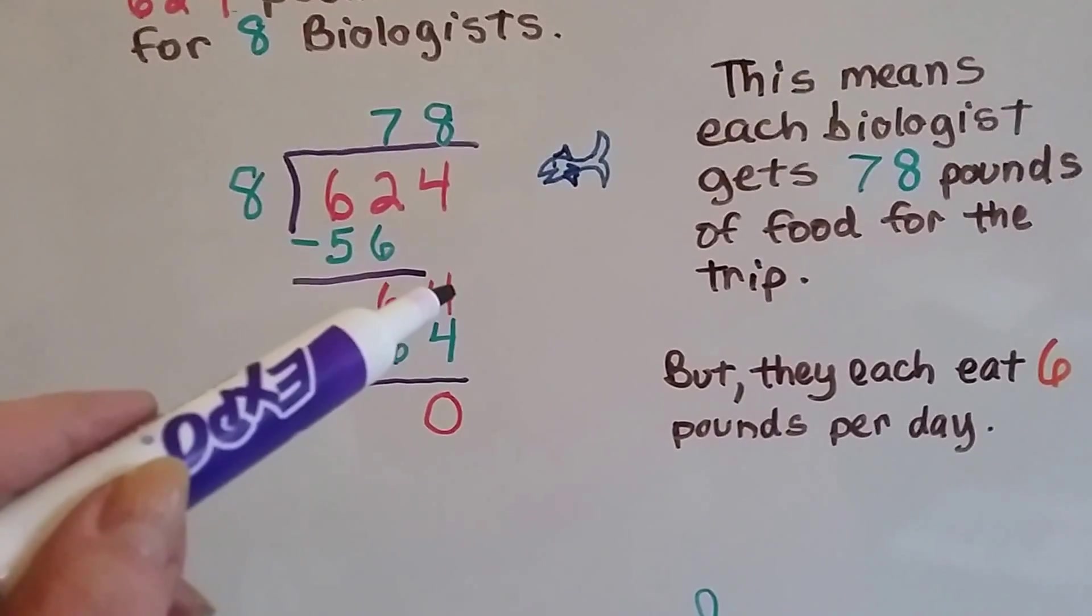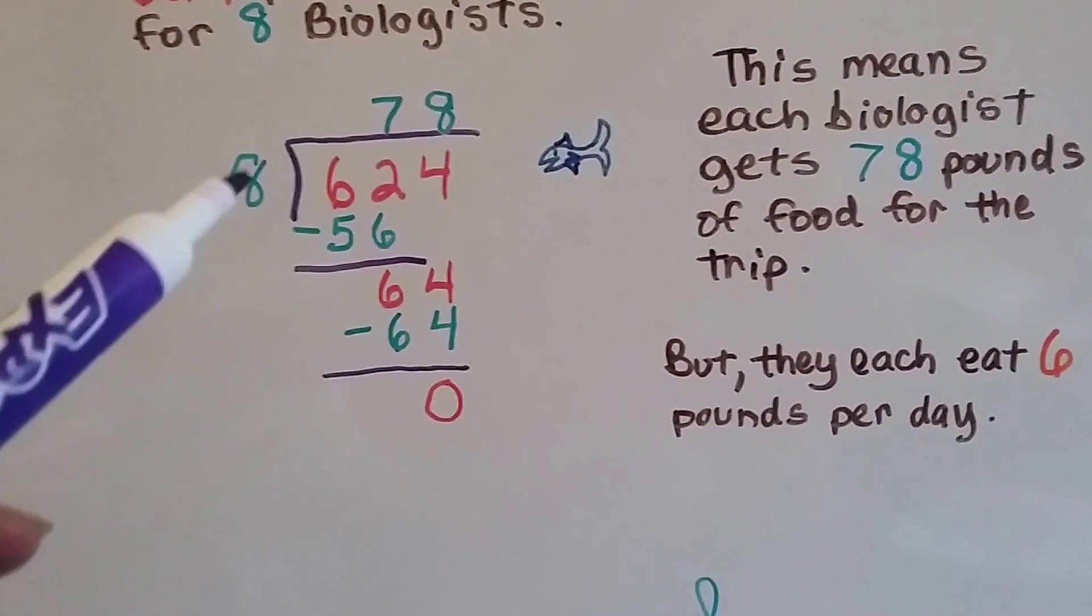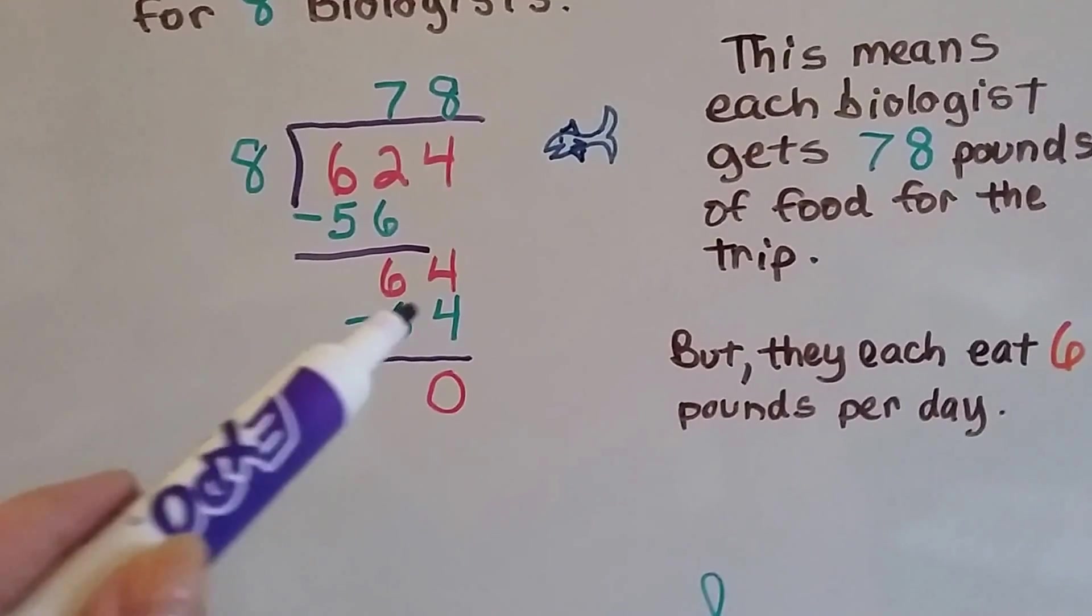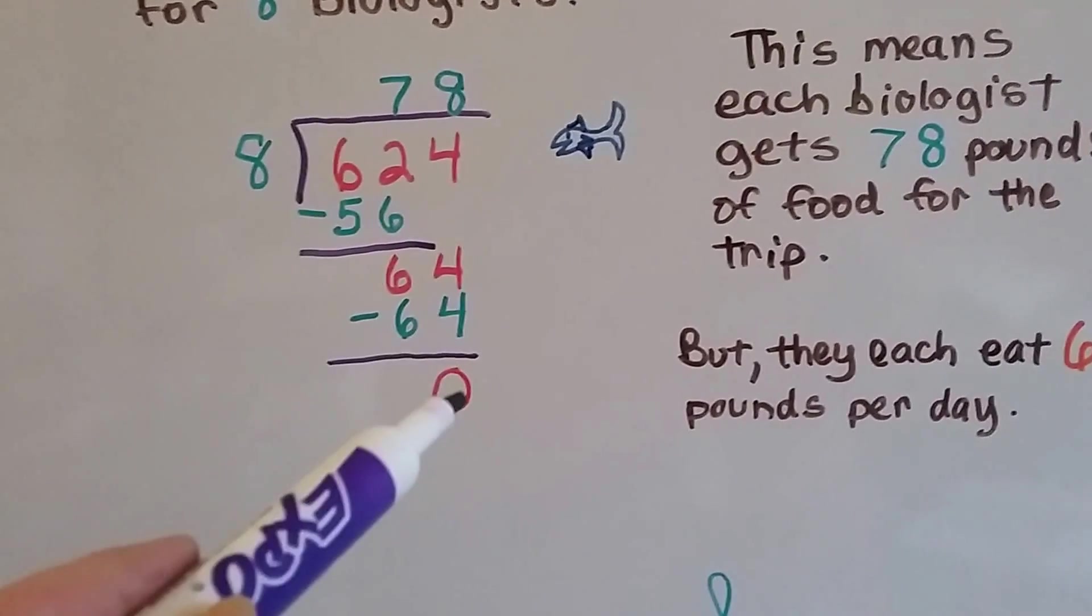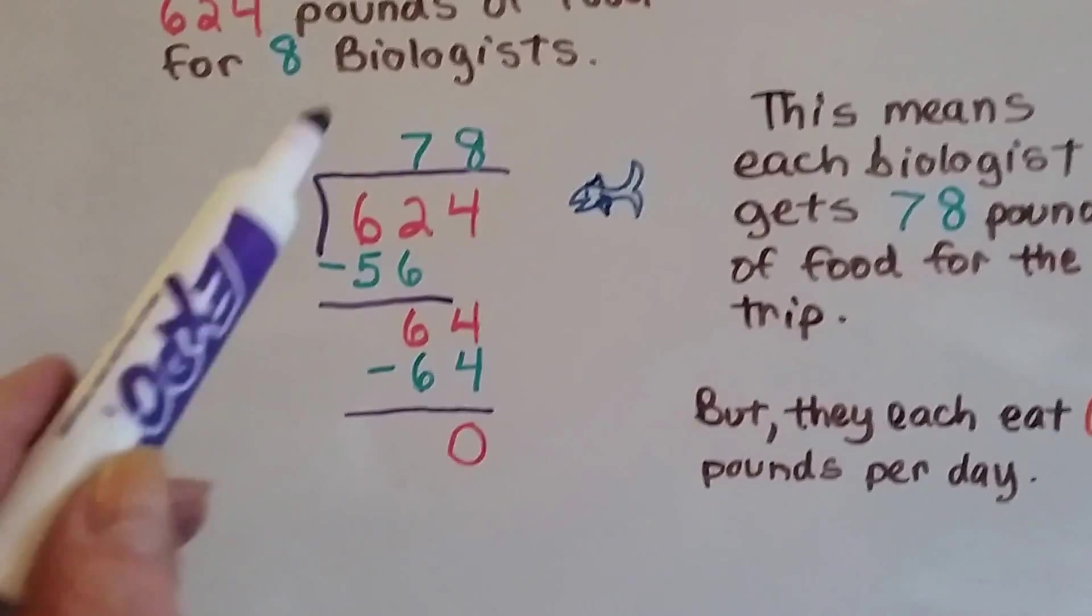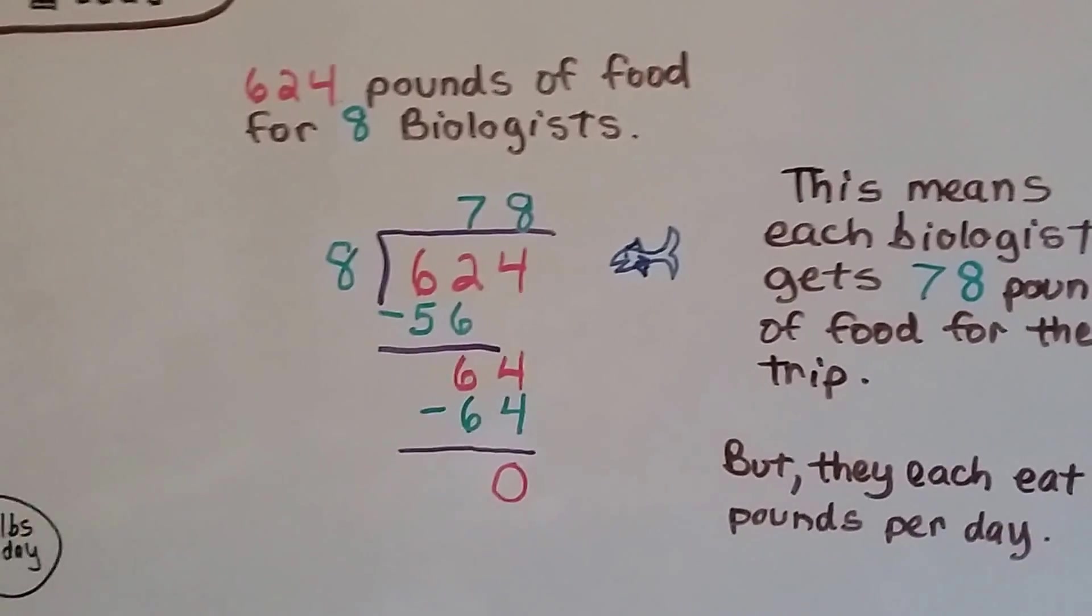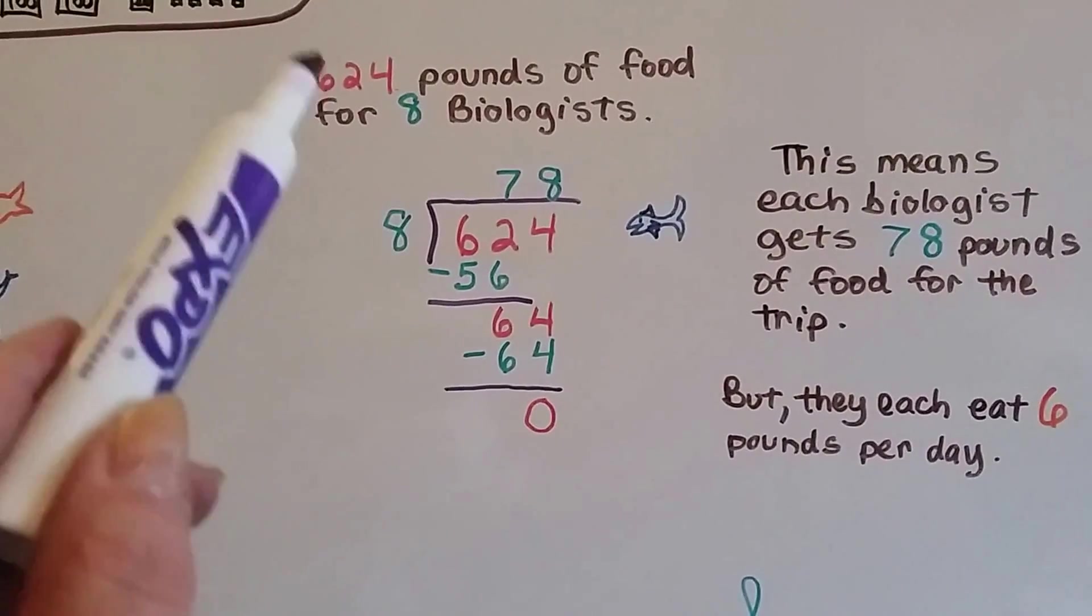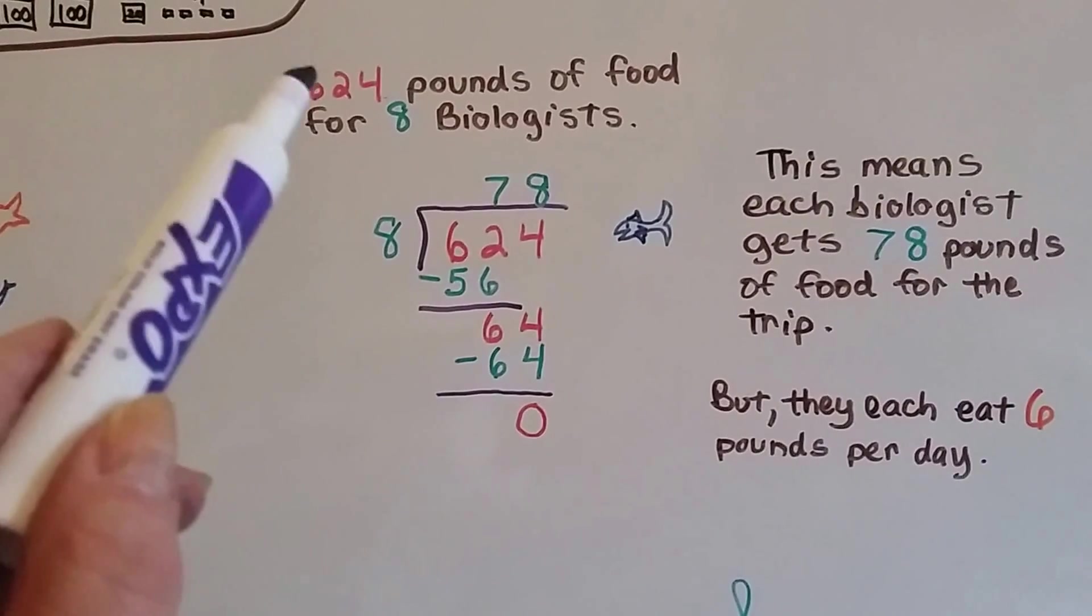Now it's the four's turn to come down, and eight goes into 64 eight times, because eight times eight is 64. We put that underneath here and subtract it, and we get zero remainder. So we know they're each going to get 78 pounds. Each biologist, each of these eight biologists is going to get 78 pounds out of this 624.